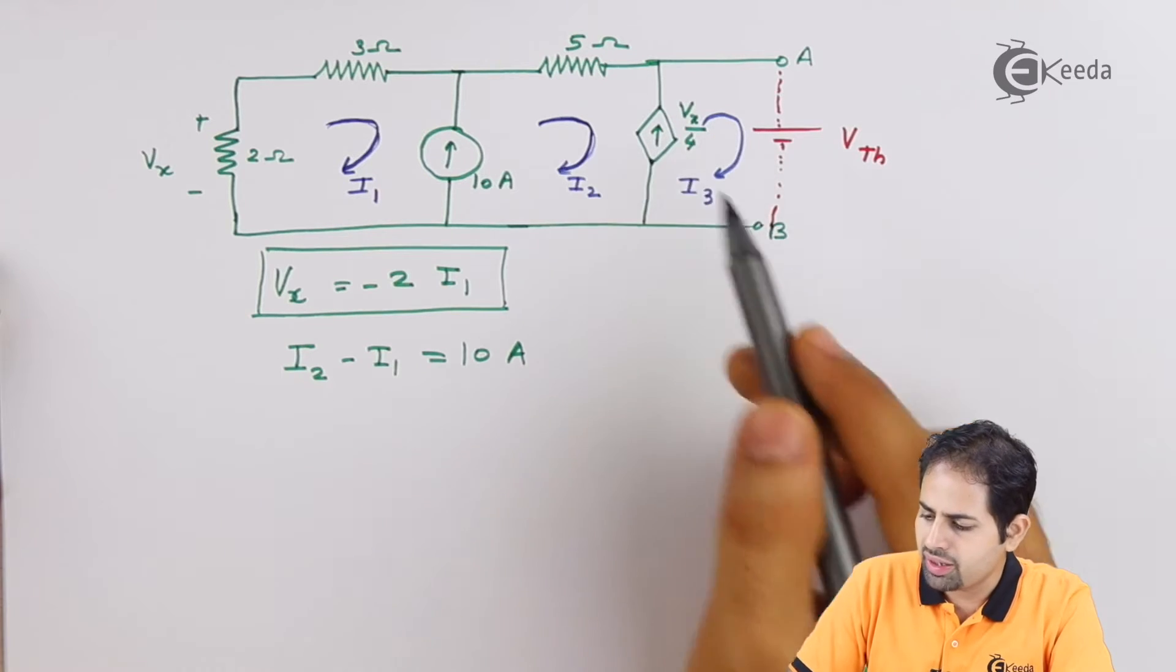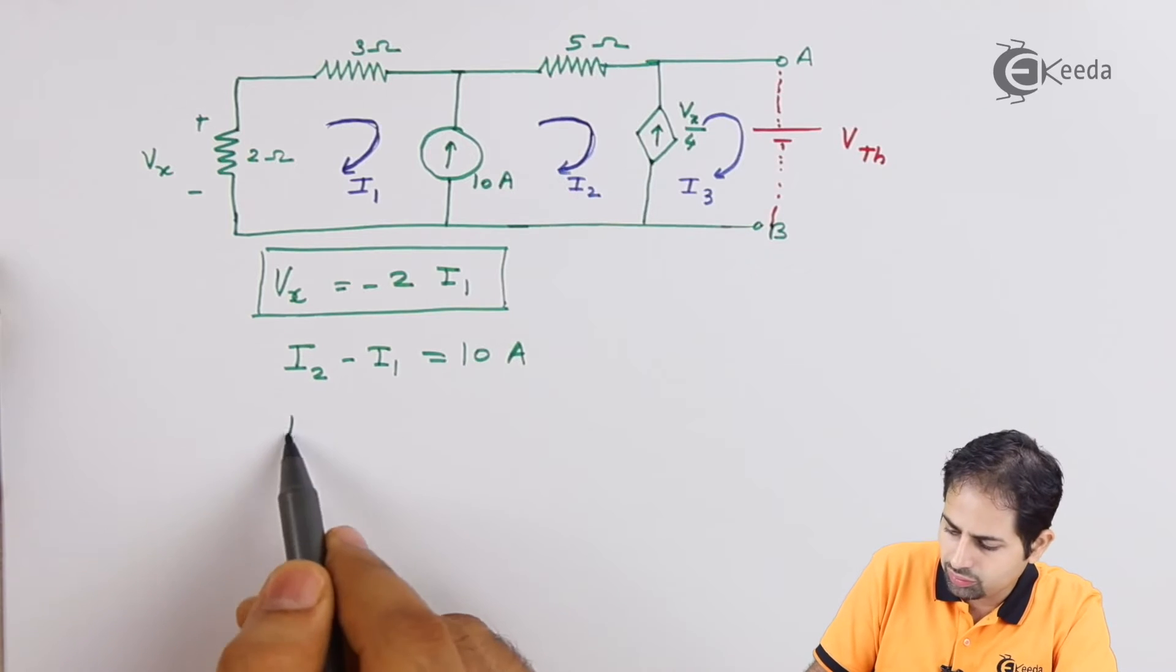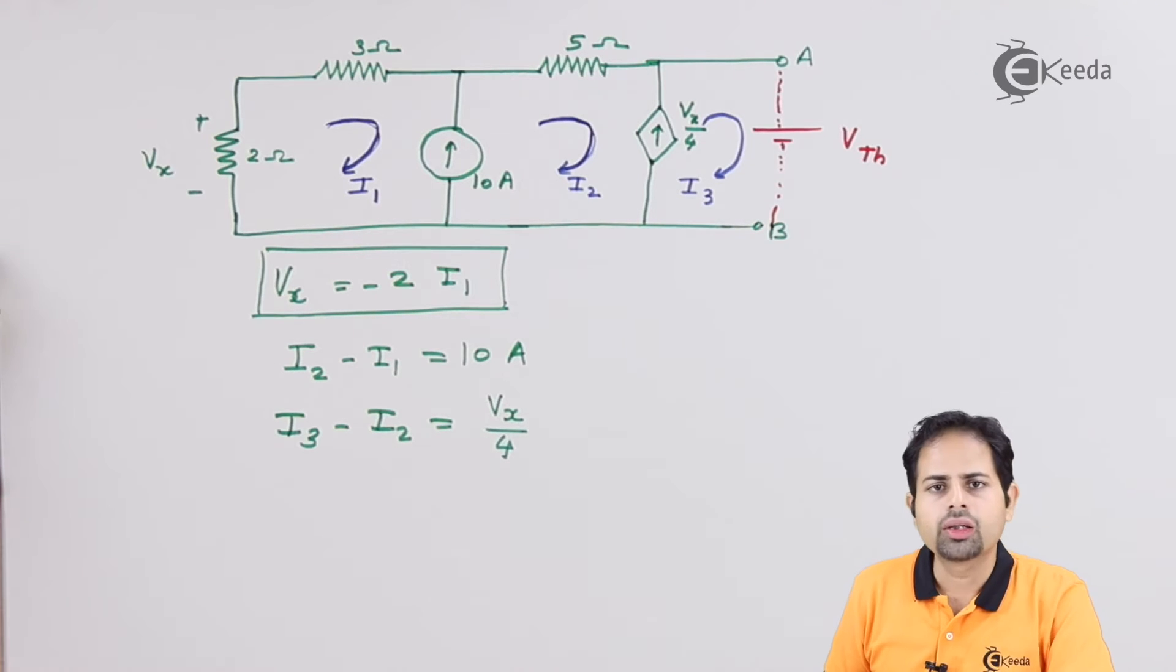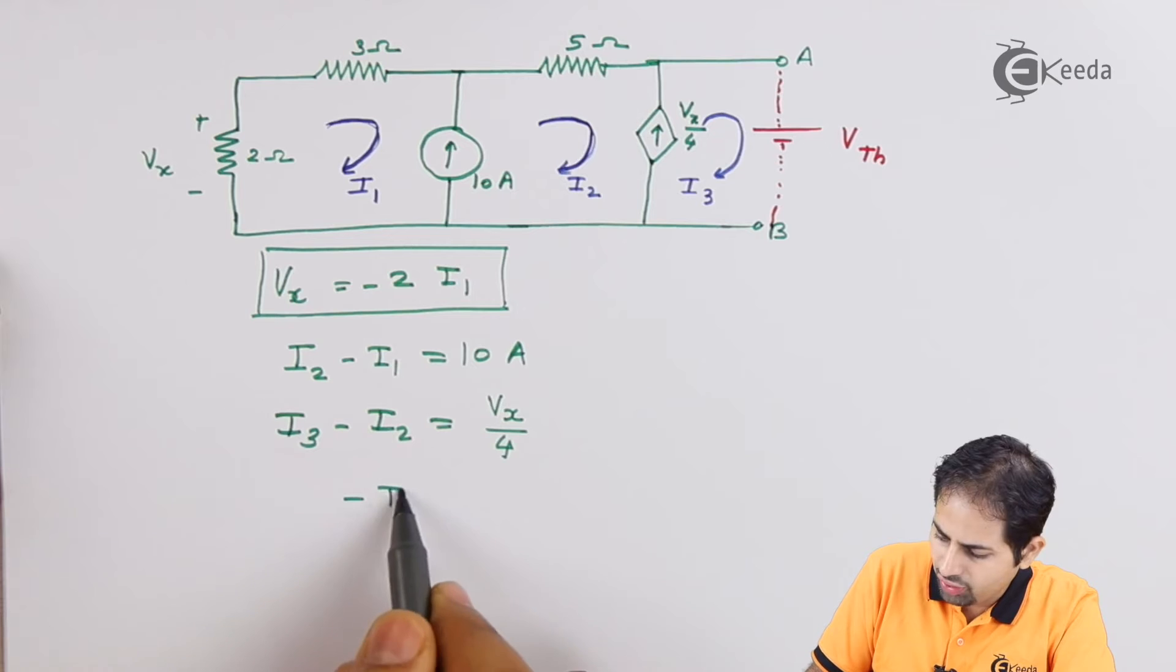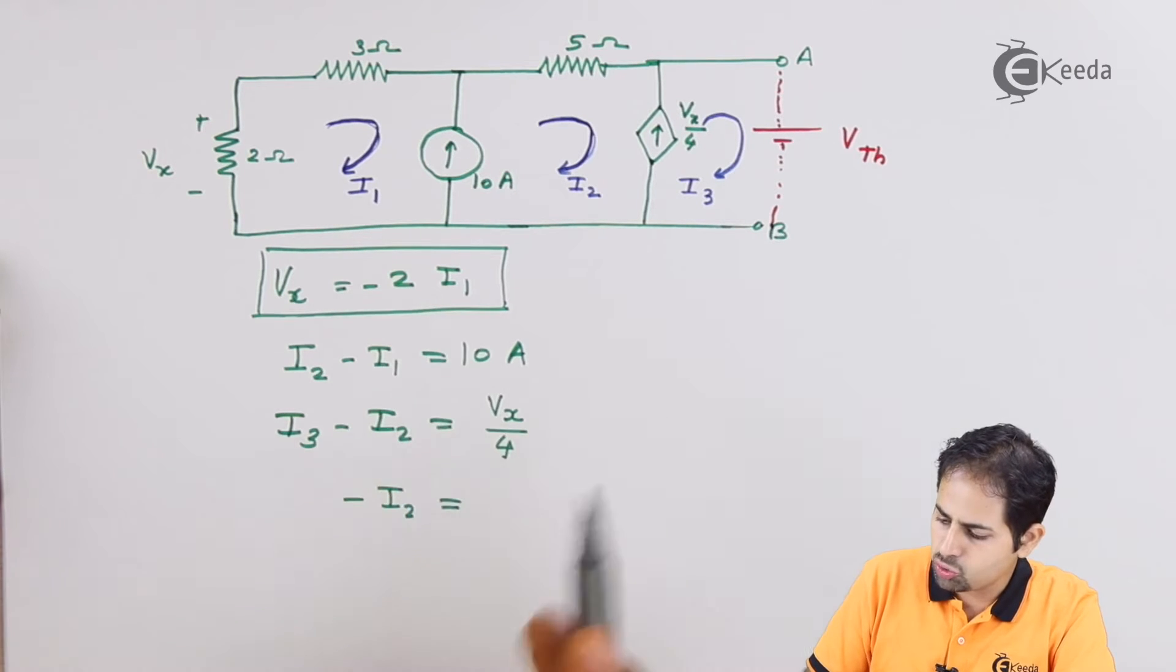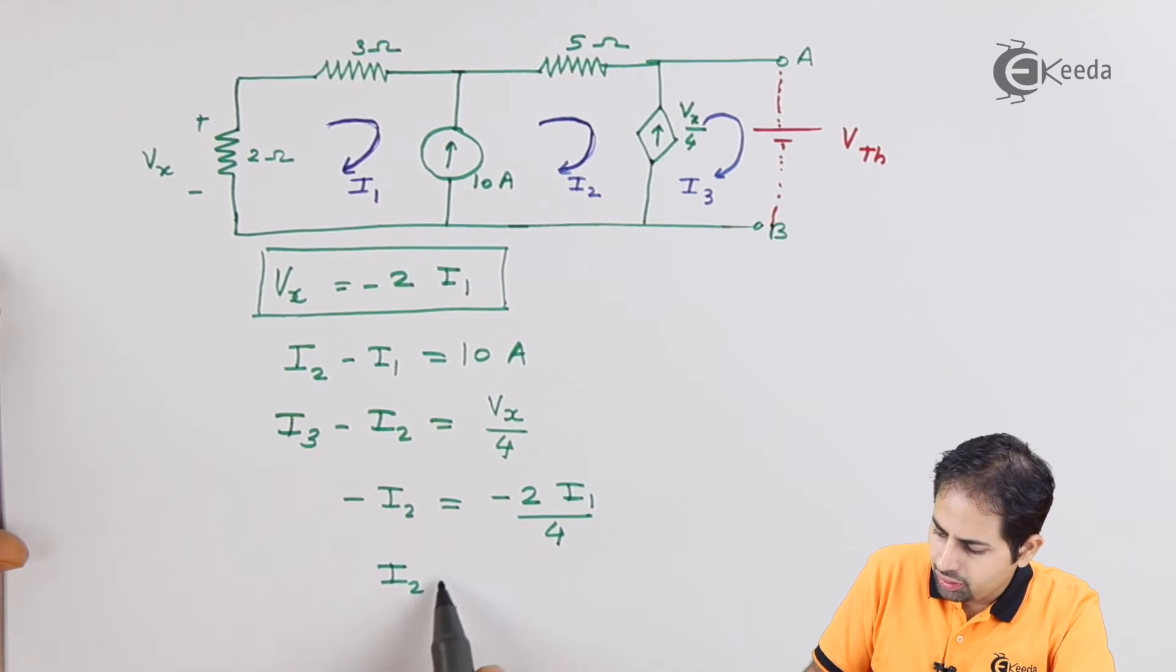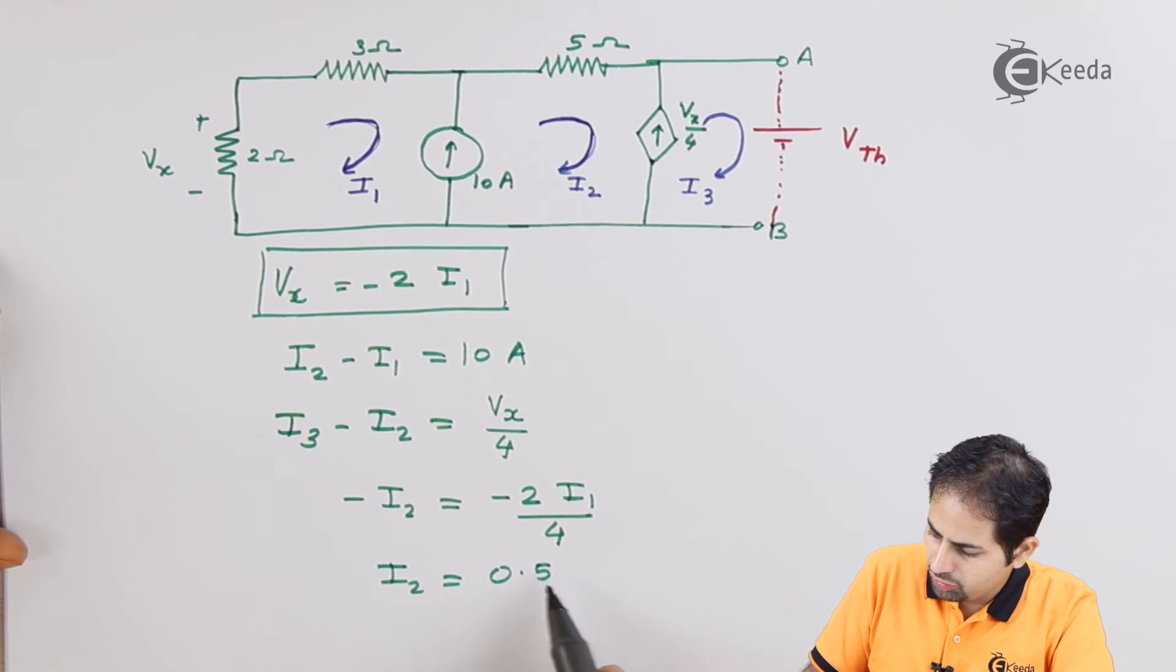So here I can write I3 minus I2 from this second super mesh, we can write I3 minus I2 equal to Vx divided by 4. Now out of this, this I3 is 0, so it is going to be minus of I2 equal to Vx divided by 4. But Vx is minus 2 into I1, so it is minus 2 into I1 divided by 4. Or I can write, this minus minus minus will become positive, I2 is 0.5 into I1.